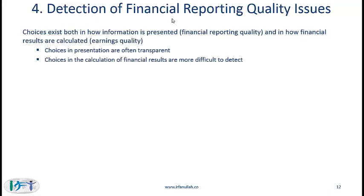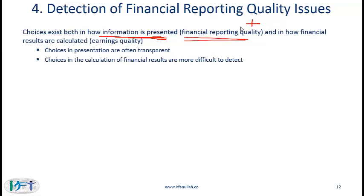Section 4: Detection of Financial Reporting Quality Issues. What we have seen so far in this reading, and also based on what we have seen in other readings in financial reporting and analysis, we recognize that companies have choices in how they present information. Companies also have choices in how financial results are calculated. The choice with regards to how information is presented results in financial reporting quality. If information is presented well and properly reflects the underlying economic situation, then the financial reporting quality is high; otherwise it is low.